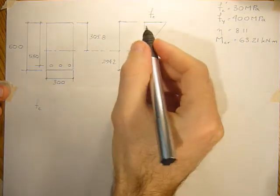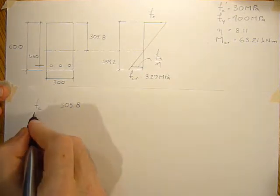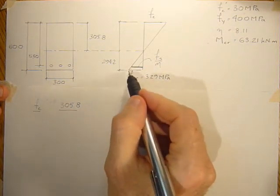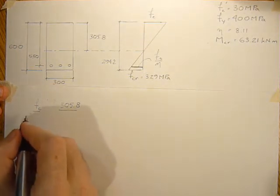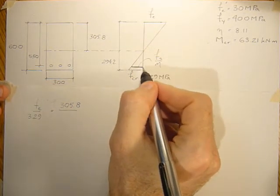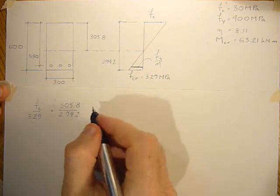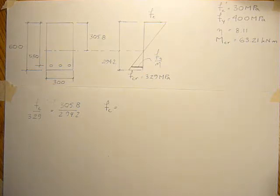The stress in the concrete corresponds to a distance of 305.8. The cracking stress at the cracked section is 3.29 MPa, corresponding to a distance of 294.2. So we rearrange and solve for fc: the stress in the concrete is 3.29 times 305.8 divided by 294.2, which gives 3.41 MPa.